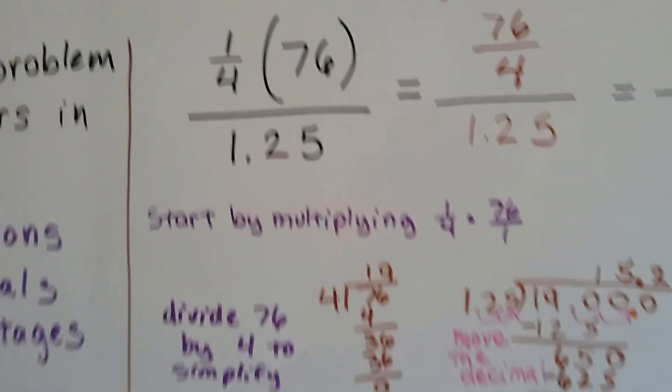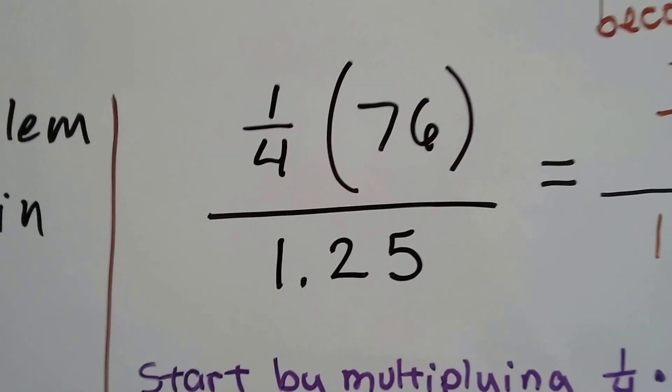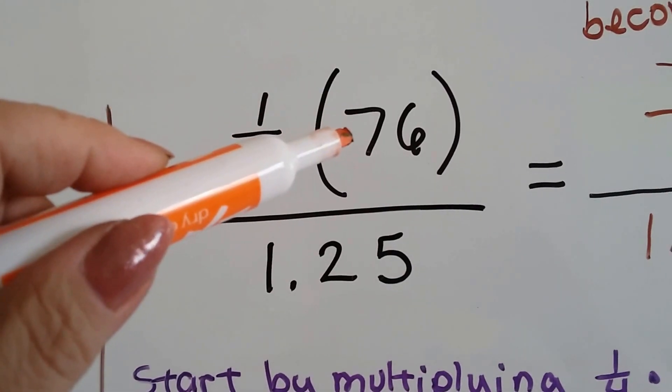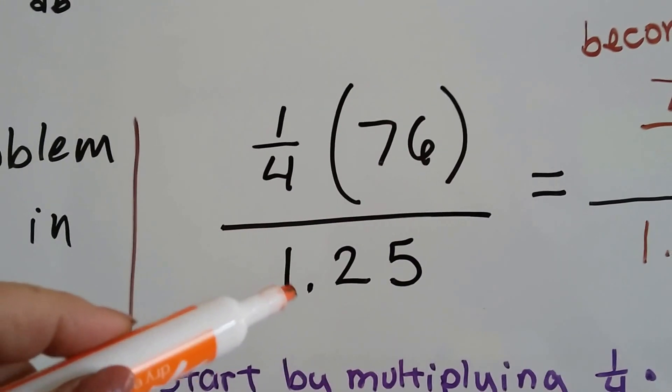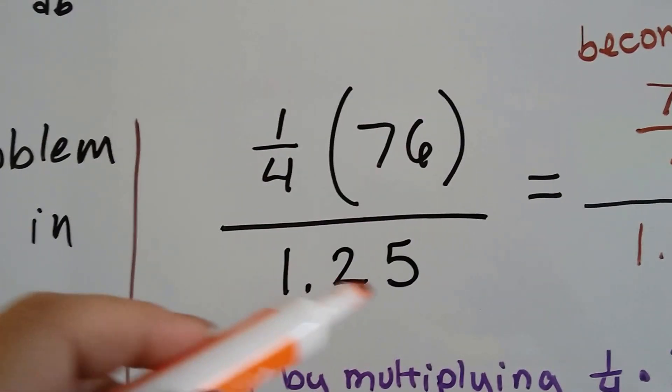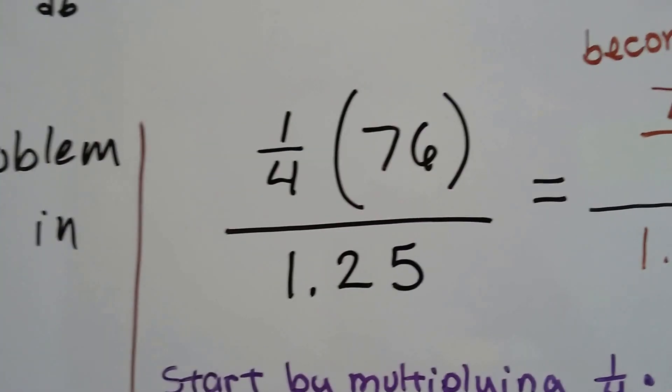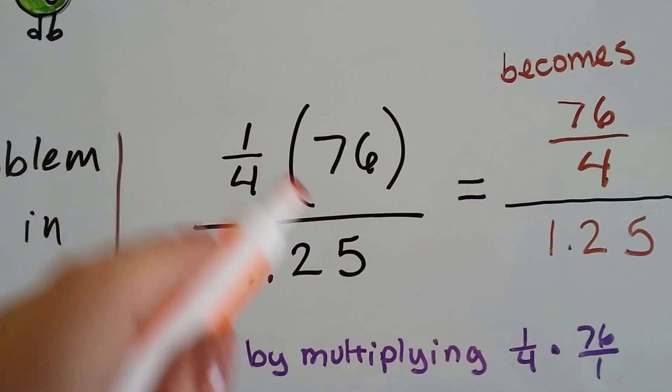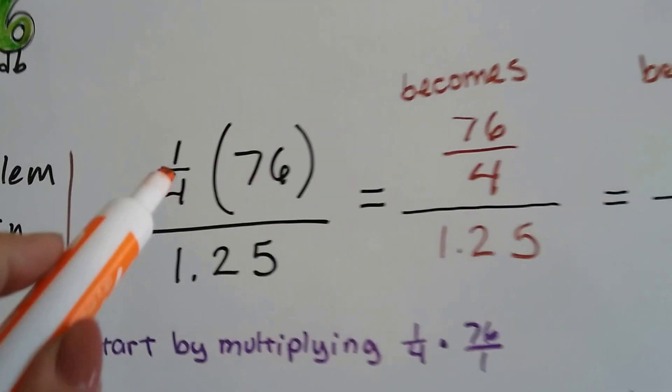Alright, so you might see an equation that looks like this. You've got a fraction multiplied to another number as a fraction, because it's over 1.25 like this. It's over a decimal. Wow! Well, it's no big deal. All we do is this little part first, and then we deal with that afterwards.